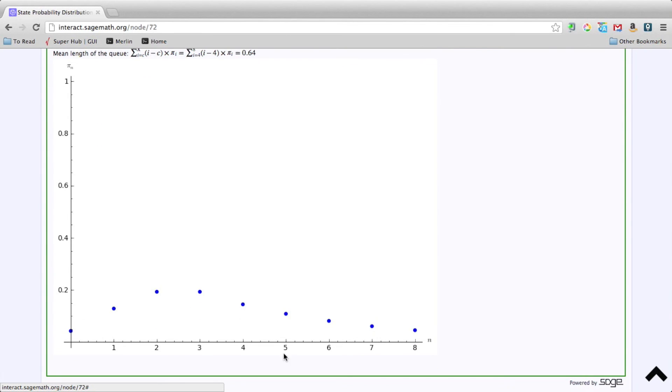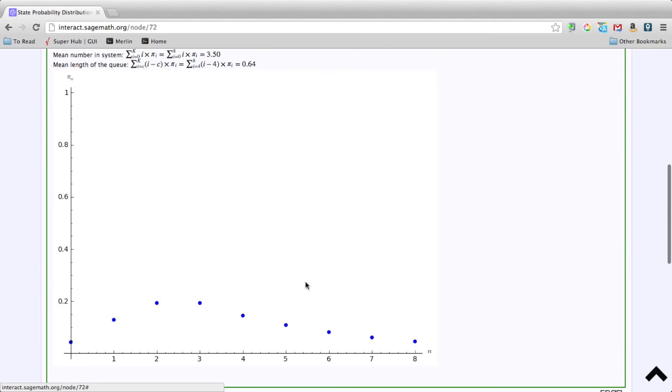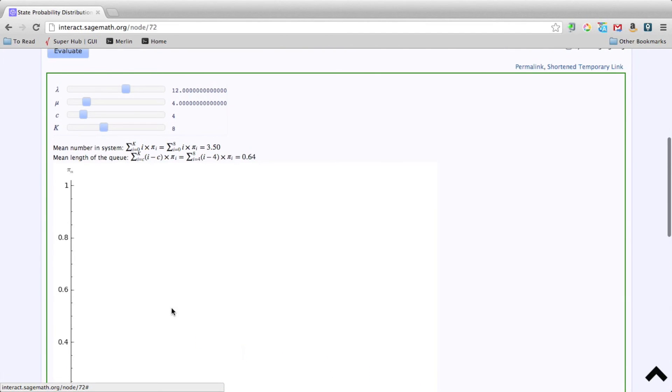What we can also see here is a quick plot. We see the probability distribution of the number of people in the system, so it's pi n, which is there. It seems like more often than not, we have two or three people in the system.